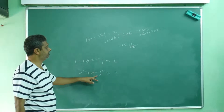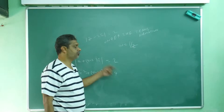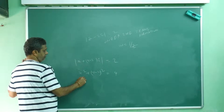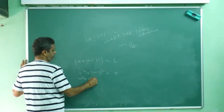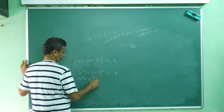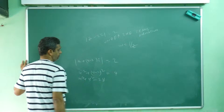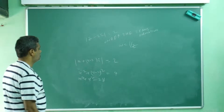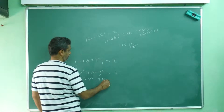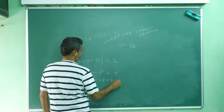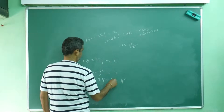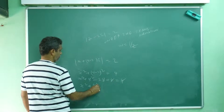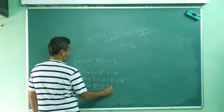Center at (0, 2) and radius 2, so r² = 4. Expanding: x² + y² - 4y + 4 = 4, which simplifies to x² + y² - 2y = 0. This is a circle that passes through the origin.